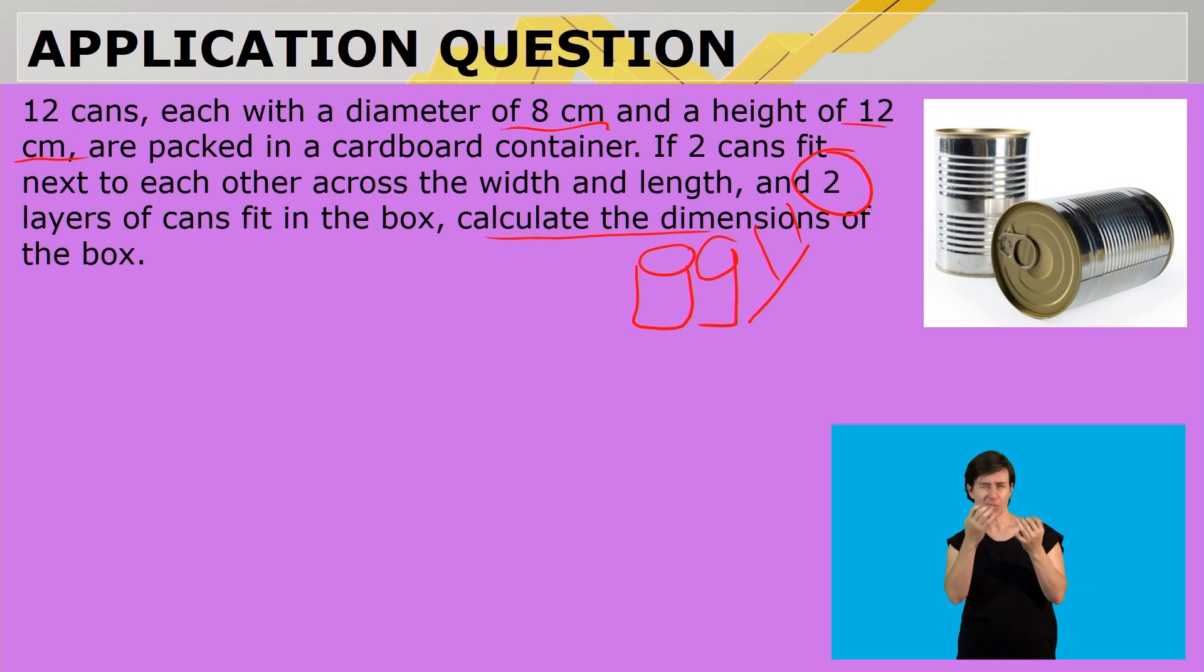Calculate the dimensions of the box. So, remember, in the length, there can go two cans of a diameter, we're working with a diameter of 8, so that is 16 in the length, and 16 in the width.